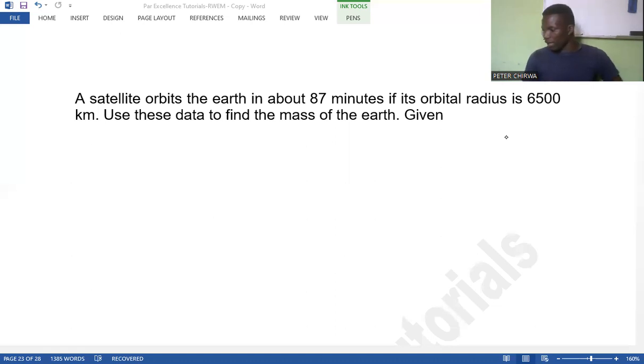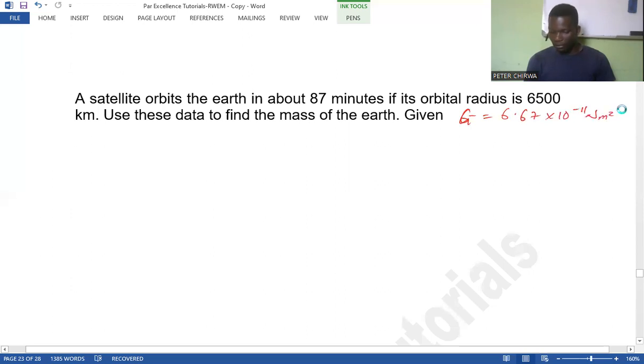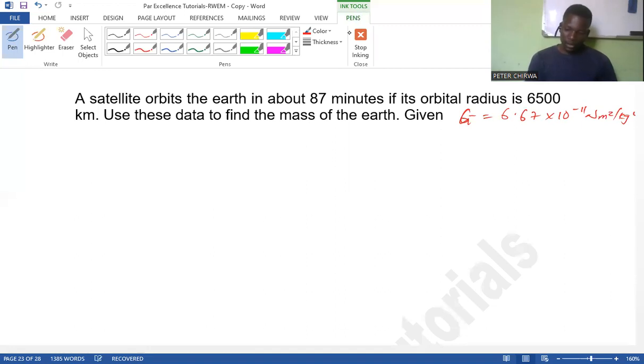Given, I think here, we're given the value of G, which happens to be the constant. So I think it's the one that was supposed to be given here: G equals 6.67 by 10 to the power negative 11 Newton square meter per kg.